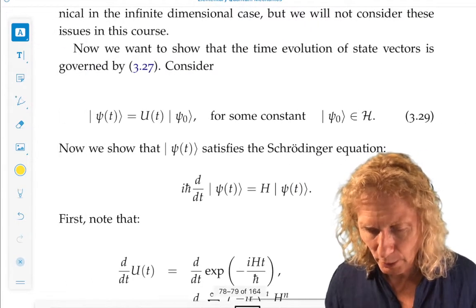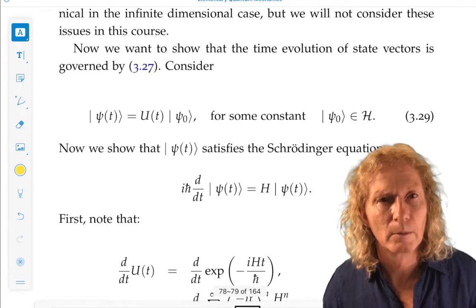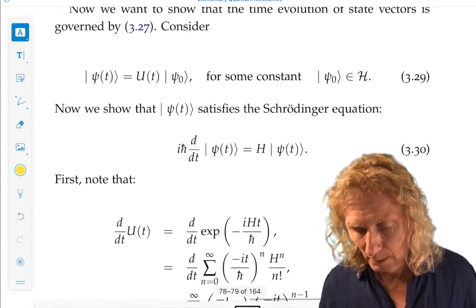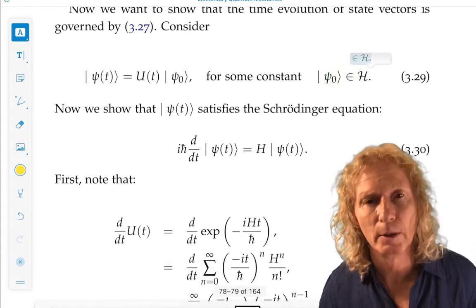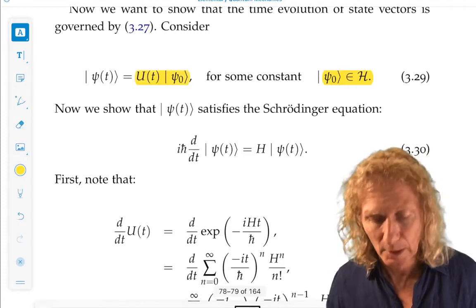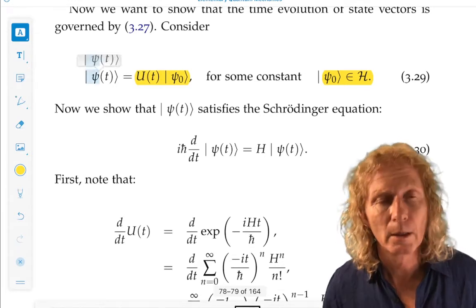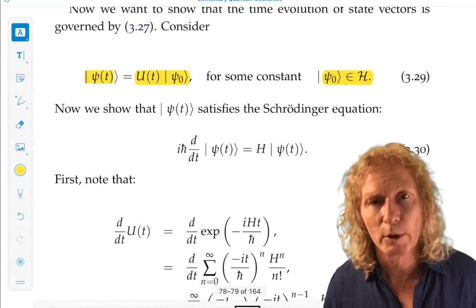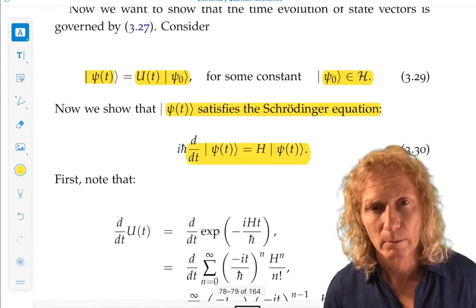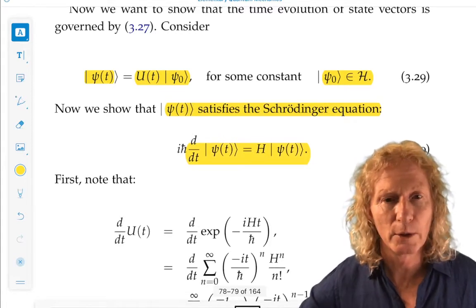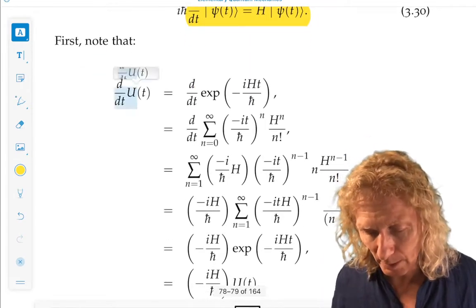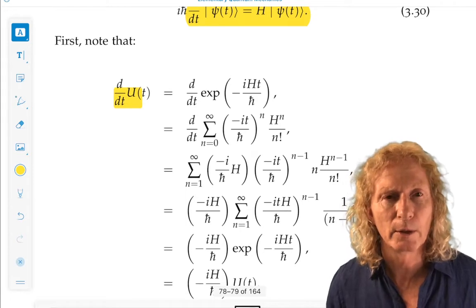So I want to show that time evolution of the state vector is governed by this U(t) that I just wrote down. So we take an initial state in the Hilbert space, it's constant in time, act on it with U(t), and that gives us a time-dependent state vector. And what we want to prove is that time-dependent state vector satisfies the Schrödinger equation. So we need to substitute it into the equation and see that it is satisfied. First, we need a preliminary calculation. We need to differentiate with respect to time U(t).